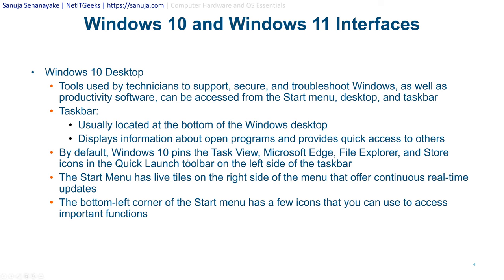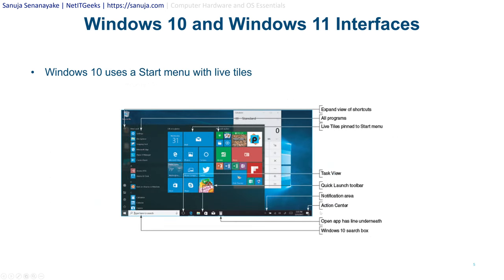This is also true with the newly released Windows 11. The start menu has live tiles on the right side that offer continuous real-time updates, which is also a feature in Windows 11. The bottom left corner of the start menu has a few icons for accessing important functions. On the right-hand side you will see the Action Center in Windows 10, and in Windows 11 it is called the Notification Center, with icons you can use to interact with the operating system. The start menu in Windows 10 shows all programs on the left-hand side and some pinned tiles on the right-hand side — for quick access on the right and all installed programs on the left.